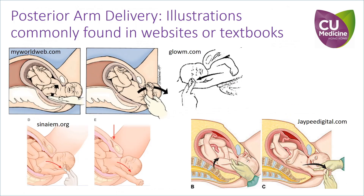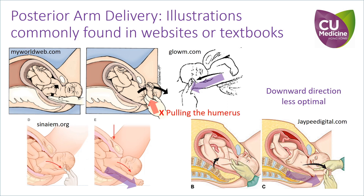For example, downward traction is not the most optimal direction, as the anterior-posterior plane of the pelvis is limited. Pulling the fetal humerus is also not effective and increases the risk of fetal injury. In addition, grasping the fetus's hand with the practitioner's fingers alone does not provide a good grip to allow for firm traction.